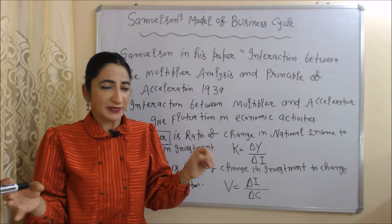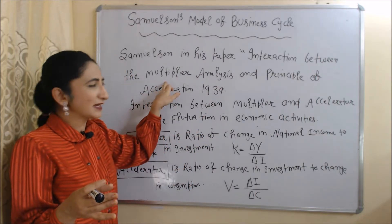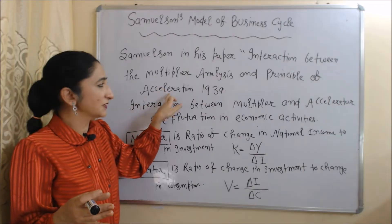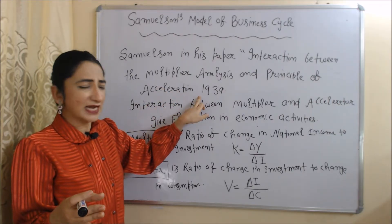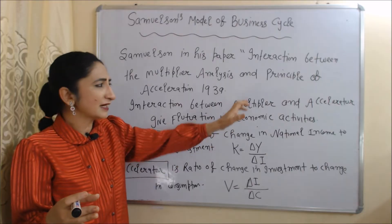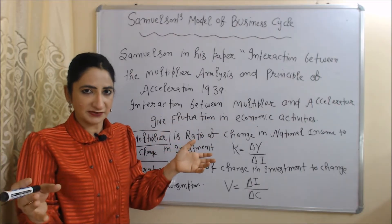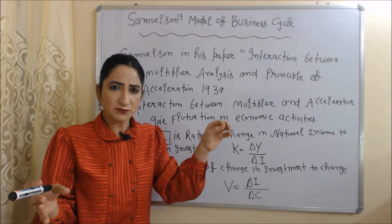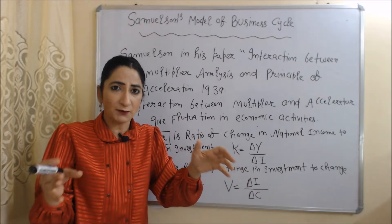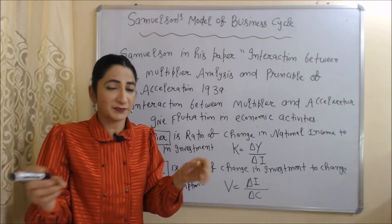Today we are going to talk about Samuelson's Model of Business Cycles. Samuelson, in his paper named 'Interaction between Multiplier Analysis and Principle of Acceleration' in 1939, showed that interaction between Multiplier and Accelerator gives fluctuation in economic activities. According to this model, whenever Multiplier and Accelerator interact, fluctuation will be created in economic activities.